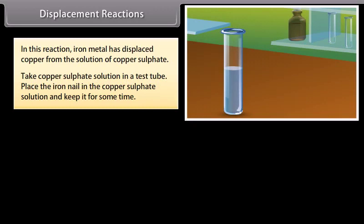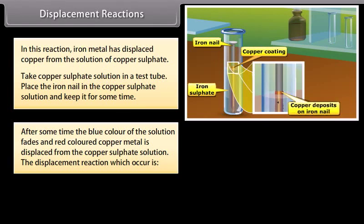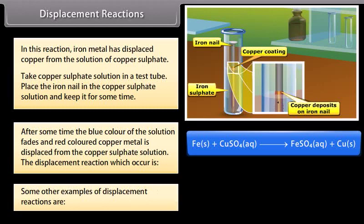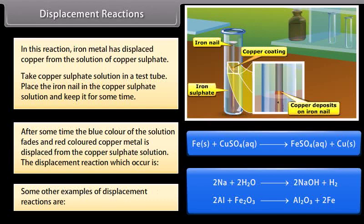Take copper sulfate solution in a test tube. Place an iron nail in the copper sulfate solution and keep it for some time. After some time, the blue color of the solution fades and red-colored copper metal is displaced from the solution. The displacement reaction is: Fe + CuSO₄ → FeSO₄ + Cu. Other examples: 2Na + 2H₂O → 2NaOH + H₂; 2Al + Fe₂O₃ → Al₂O₃ + 2Fe.